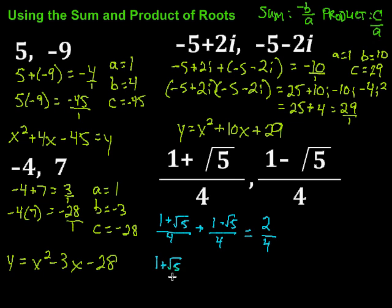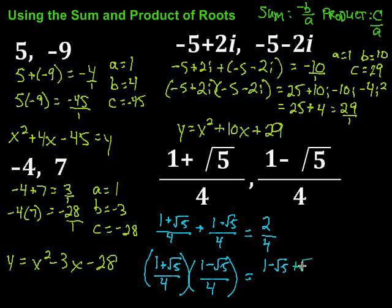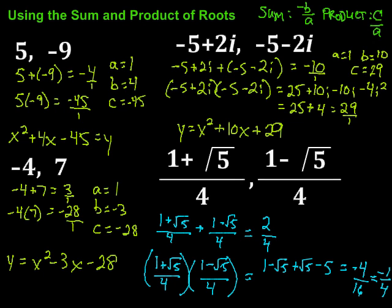For the product: 1 plus square root of 5 over 4, multiplied by 1 minus square root of 5 over 4. FOILing the numerators: 1 times 1 is 1; 1 times negative square root of 5 is negative square root of 5; square root of 5 times 1 is plus square root of 5; and square root of 5 times negative square root of 5 is minus 5. The square root of 5 terms cancel, leaving 1 minus 5, which is negative 4. The denominator is 4 times 4 equals 16. So we get negative 4 over 16, which simplifies to negative 1 over 4.